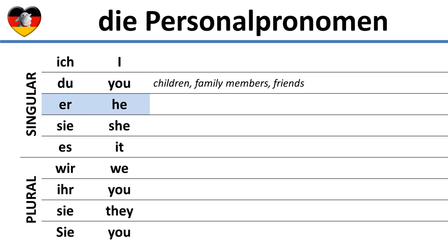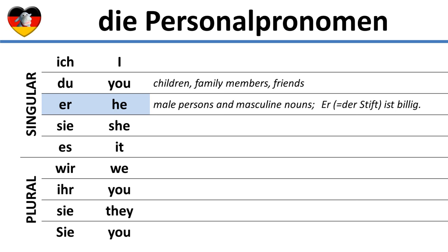The next pronoun is er. It is used just like in English, but it is also used to refer to a masculine noun, in which case we would use it in English. For example, in German the pen, der Stift, is masculine. When we want to say it, the pen, is cheap, in German we have to use er because we have to use the masculine pronoun for a masculine noun. The sentence would be: er ist billig. Note that the pronunciation of this word is close to the British pronunciation of the word er — the r at the end is not pronounced.